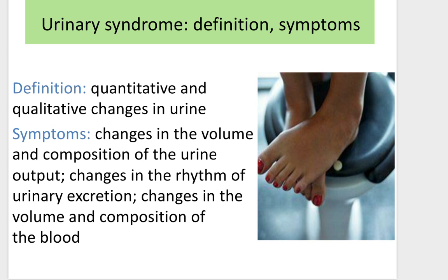The first syndrome for today is urinary syndrome. It is defined as quantitative and qualitative changes in urine, connected with laboratory urine tests. All quantitative and qualitative changes isolated from all other symptoms or syndromes, we name urinary syndrome. Symptoms include changes in the volume and composition of urine output, changes in the rhythm of urinary excretion, and changes in the volume and composition of the blood.